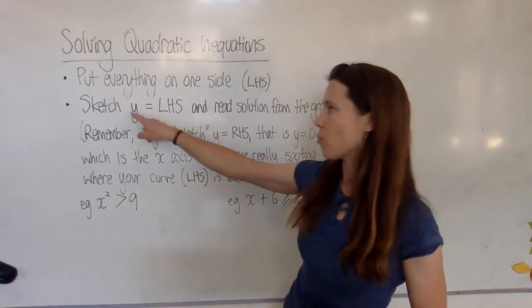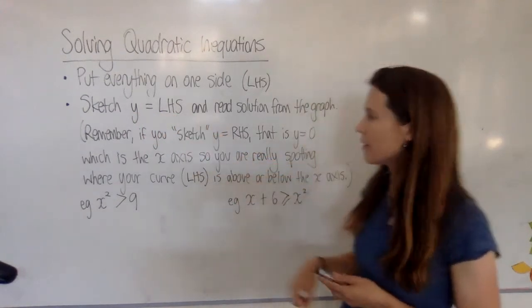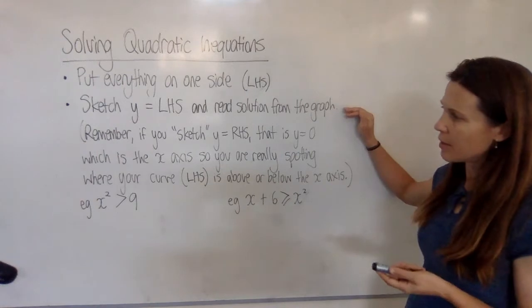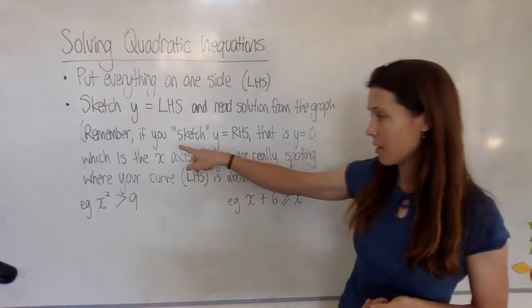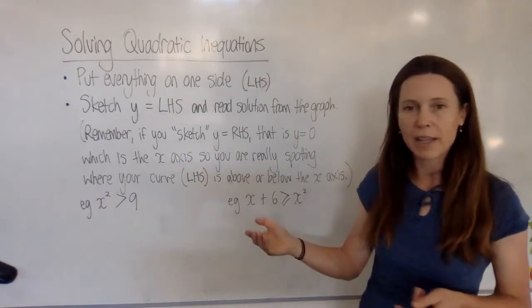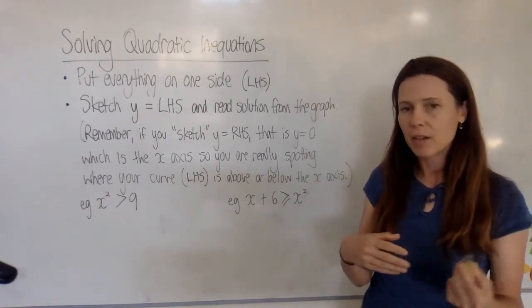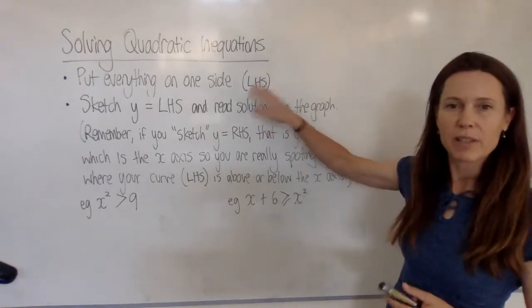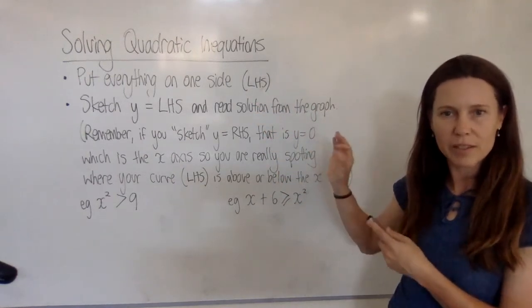Now what we want to do is sketch y equals the left-hand side and then read the solution from the graph. So one thing we've already seen is that if you're sketching y equals the right-hand side, well if you've put everything onto one side, the right-hand side should be just zero, shouldn't it?